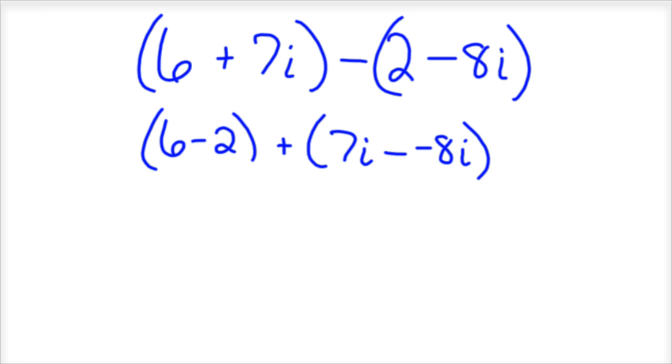So I'm just combining the pieces we can combine. That's one way to look at it, and the answer is, so 6 minus 2 is 4, and minus minus is plus a positive, and so 7 plus 8 is 15i. So the answer is just simply 4 plus 15i.